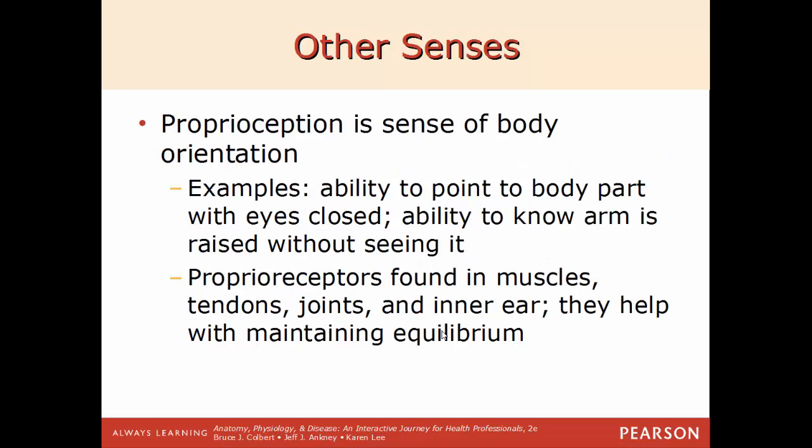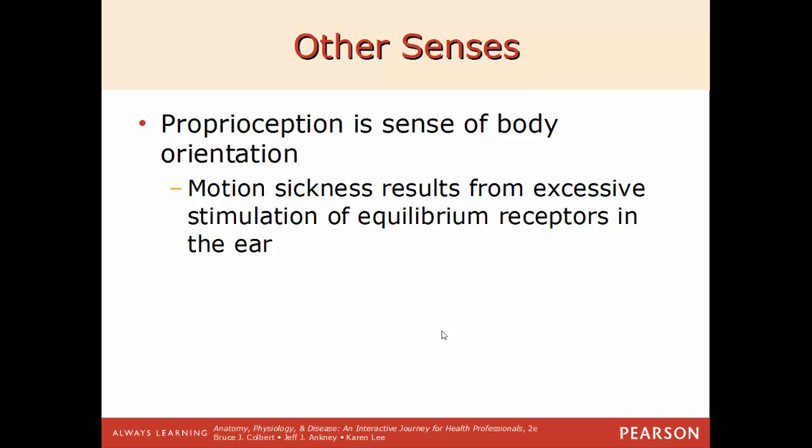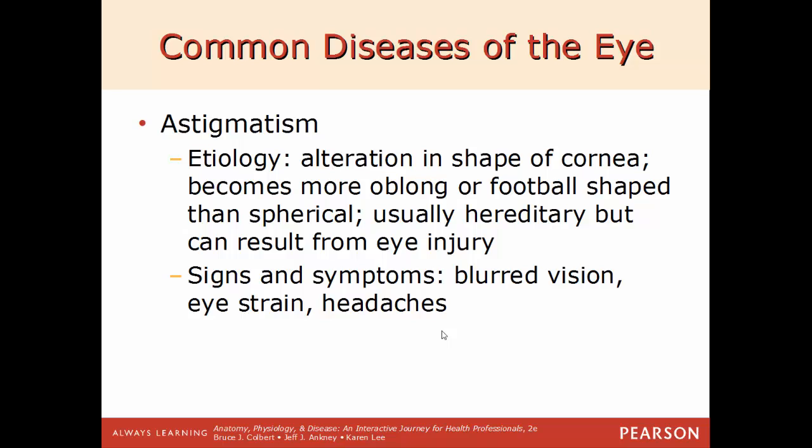Proprioception is the sense of your body's orientation — knowing where you are in space. For example, you can close your eyes and raise an arm and know which arm you're raising, or touch the tip of your nose with your eyes closed. These receptors are found in muscles, joints, tendons, and the inner ear, helping you perceive and maintain equilibrium. Excessive stimulation of equilibrium receptors in the inner ear causes motion sickness, where you feel like you're moving more than you actually are.